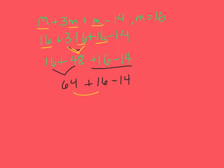64 plus 16 minus 14. 64 plus 16. Well, 64 plus 6 is 70. Plus 10 more is 80. Minus 14. 80 minus 10 is 70. Minus 4 more gives me 66 total math problems.